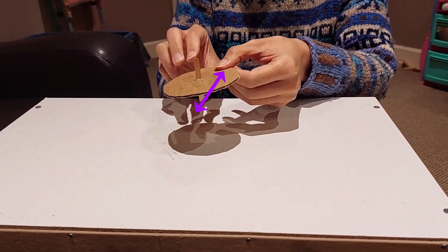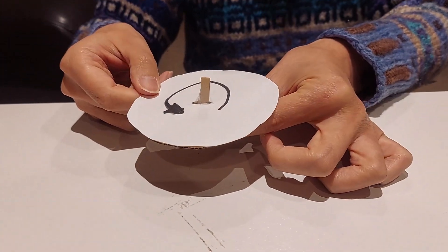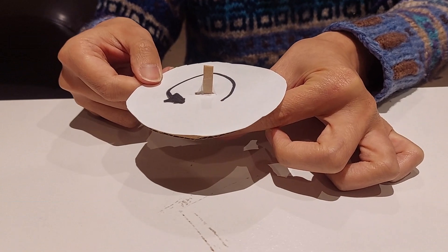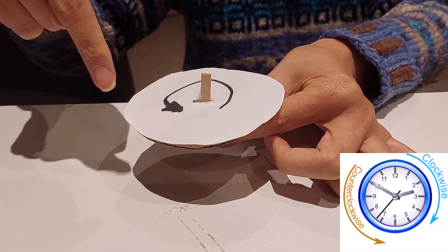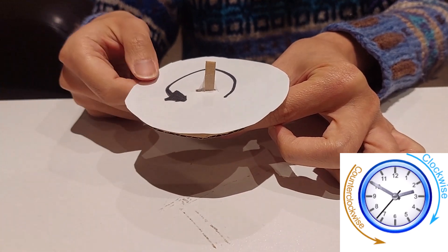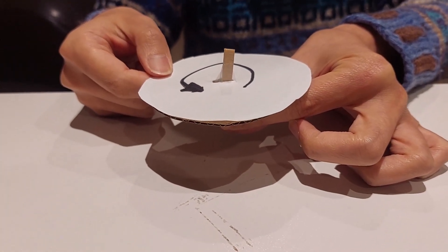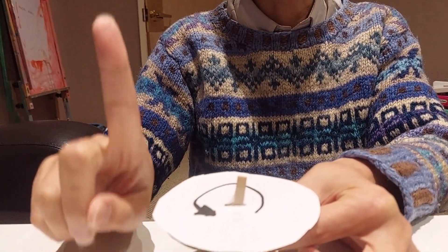Now imagine this disc is rotating in the counterclockwise direction along the horizontal plane. This rotational motion of the disc in three dimensions singles out the direction which is perpendicular to the plane of rotation